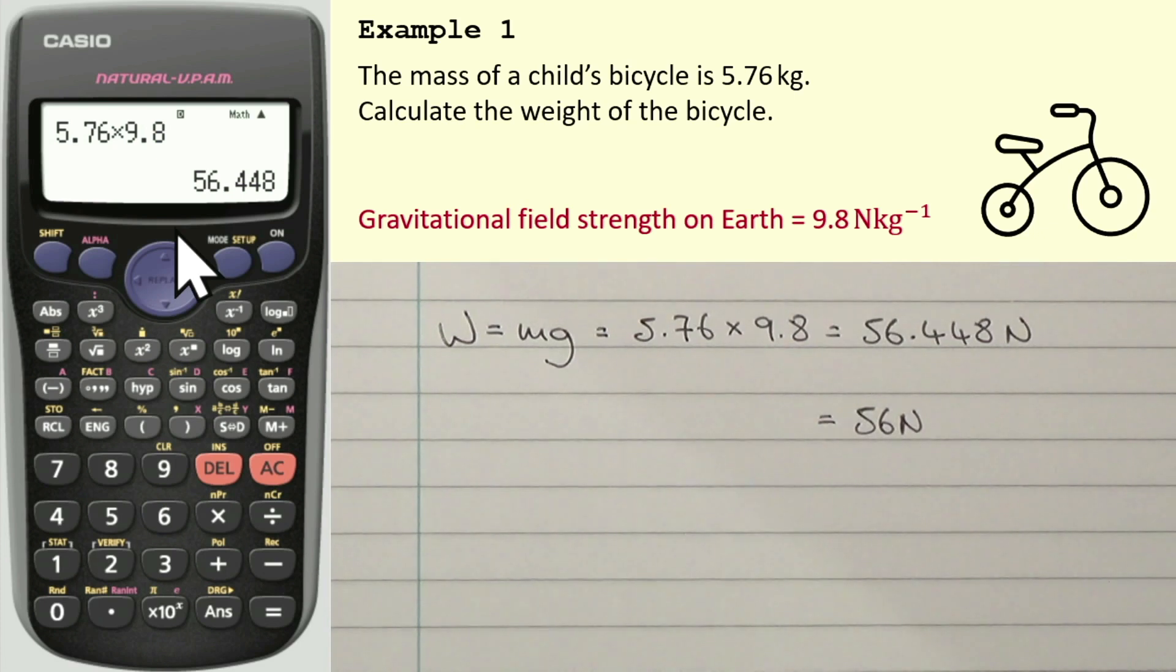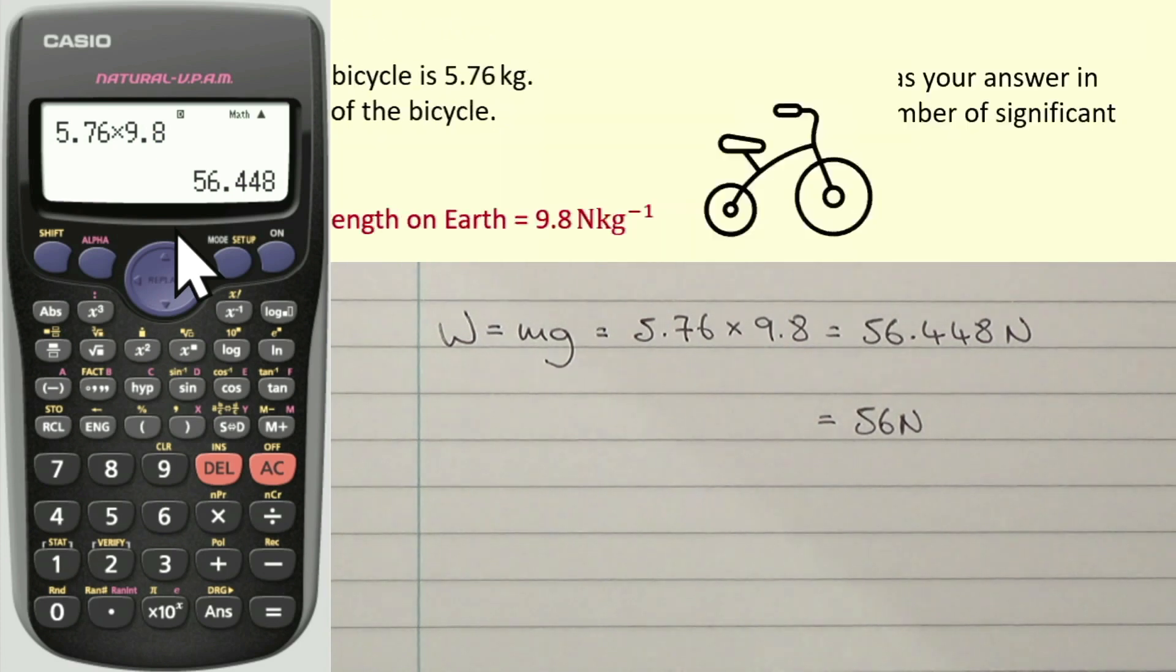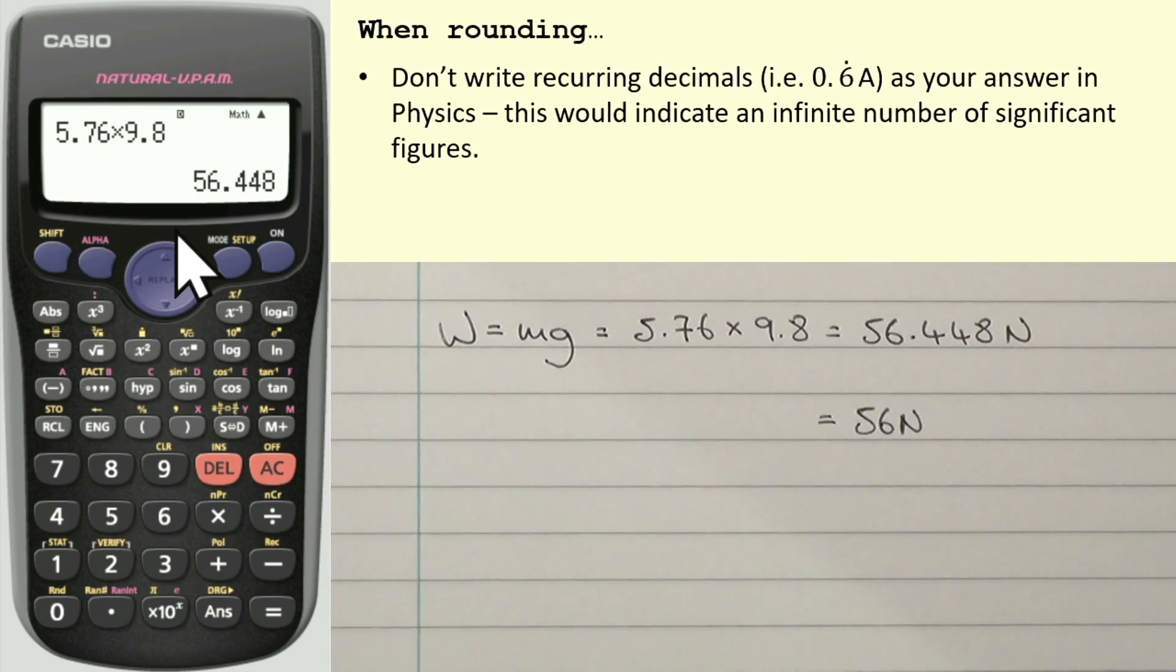Apart from, of course, don't write fractions, we also have don't write recurring decimals. So an example is 0.6 with a dot above it. That would represent 0.6666666 forever. So don't write that as your answer in physics. Because, of course, that would indicate an infinite number of significant figures. Now, that obviously breaks the first rule.